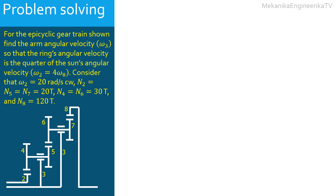This planetary gear train is built up from a sun gear, an arm 3, a ring gear 8, and 4 planet gears, which are gears 4, 5, 6, and 7. The arm, the sun gear, and ring gear have fixed axis rotation motion. The planet gears undergo general motion.